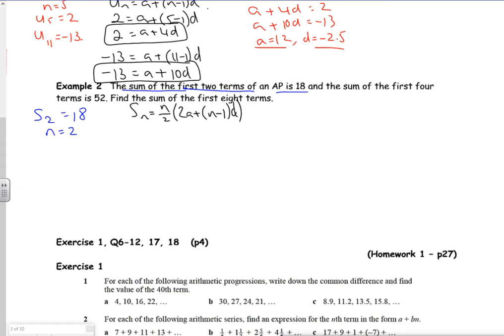From this formula, I've got 18 equals 2 over 2 times 2a plus 2 minus 1 times d. The twos cancel, I've got 18 equals 2a plus d.